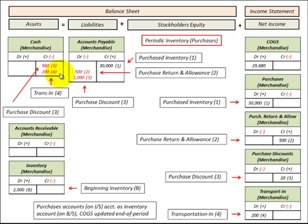Finally, let's look at a transportation-in cost on the inventory we purchased. We would decrease cash by $200 and increase our transportation-in expense by $200, which is also an expense that gets accumulated in the cost of goods sold.